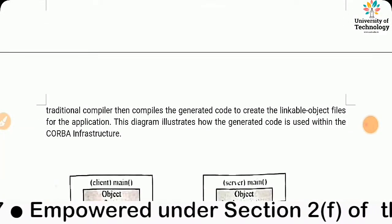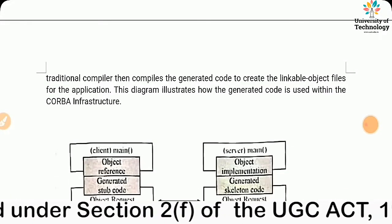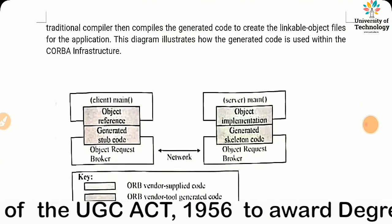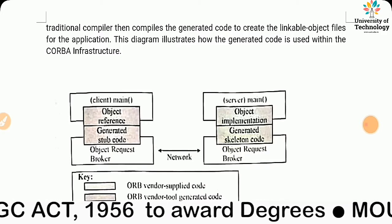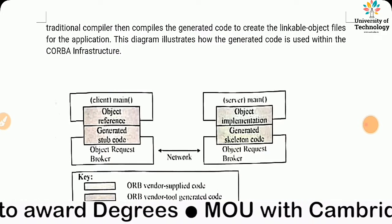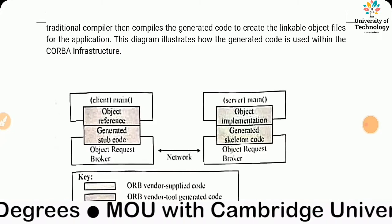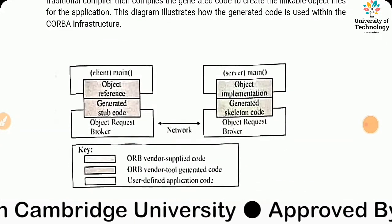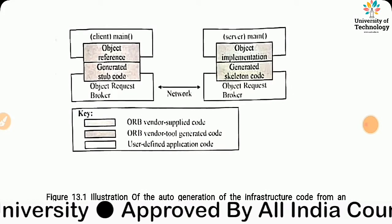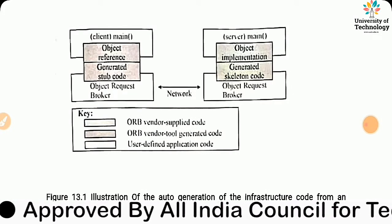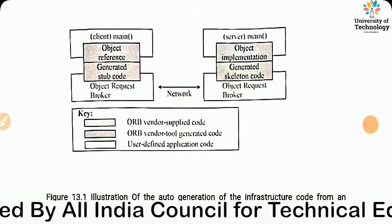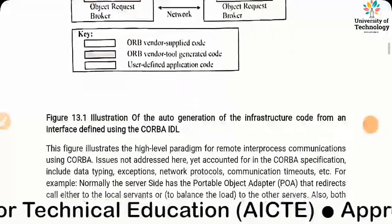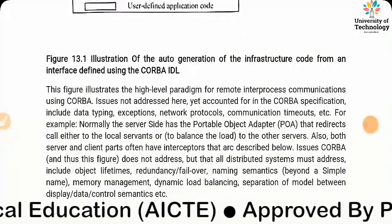This diagram illustrates how the generated code is used within the CORBA architecture. You can see here: client main, object reference, generated stub code, object implementation, generated skeleton code, ORB, server main, ORB vendor-supplied code, ORB vendor tool-generated code, and user-defined application code.